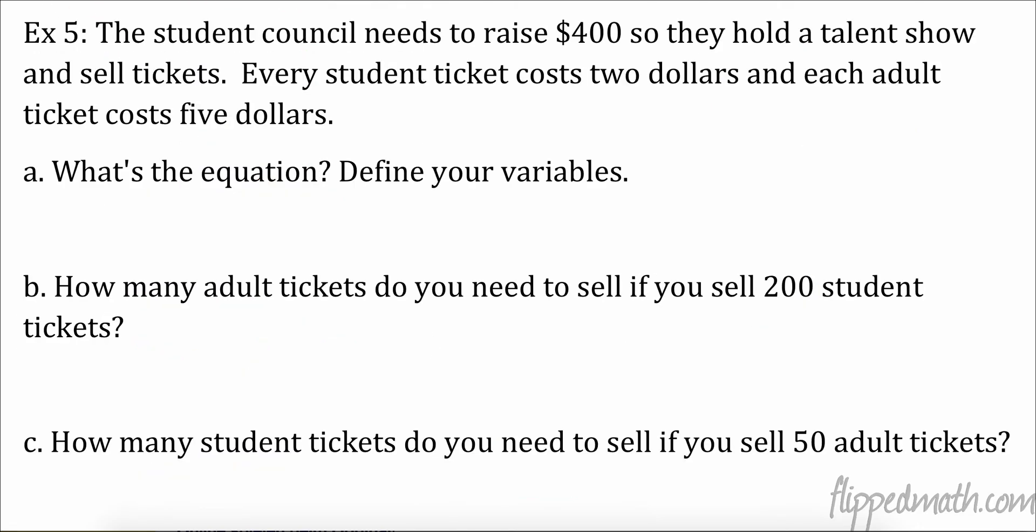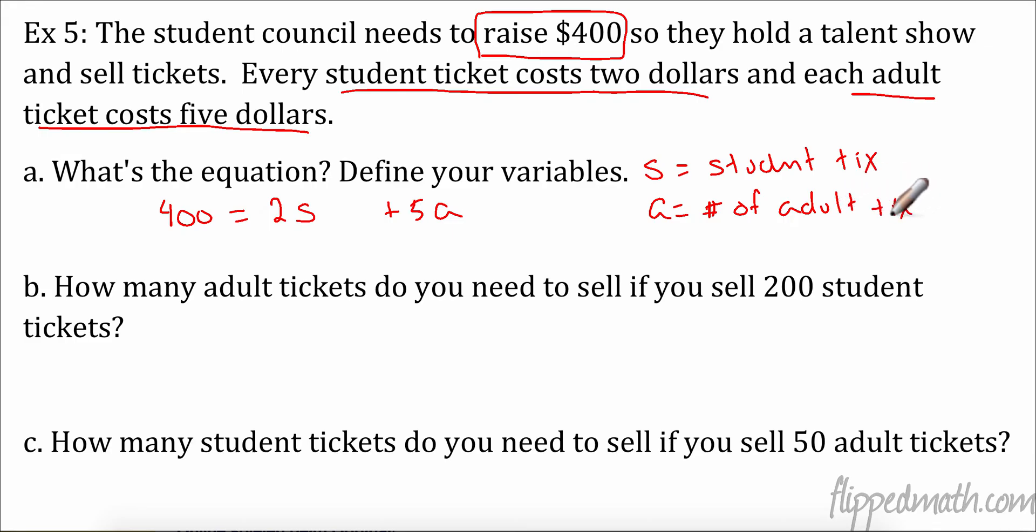Let's try another one. The student council needs to raise 400. So that seems like a total. So they can hold a talent show and sell tickets. Every student ticket costs $2 and every adult ticket costs $5. So to get to $400, we have some student tickets and some adult tickets. And every student ticket is $2 and every adult ticket is $5. So let's define those. So S is the number of student tickets. And A is the number of adult tickets.